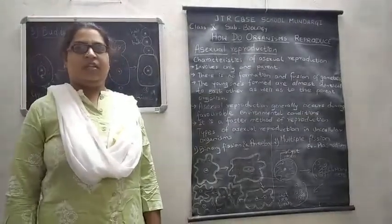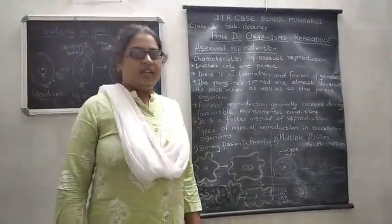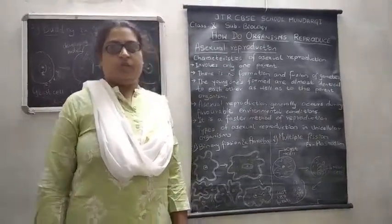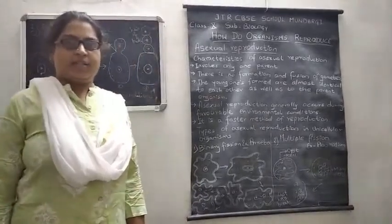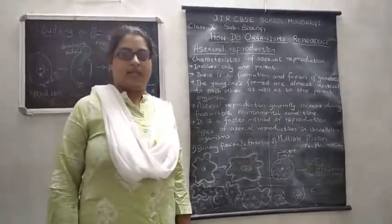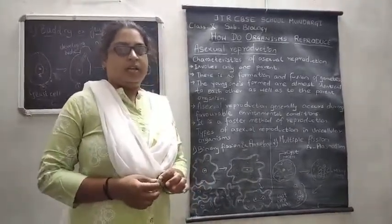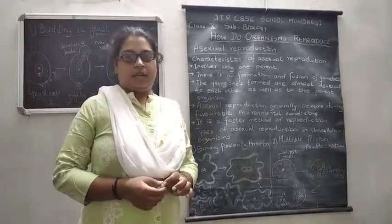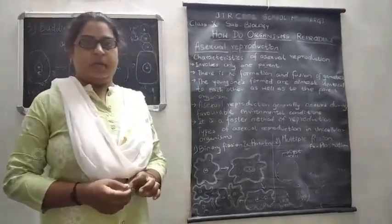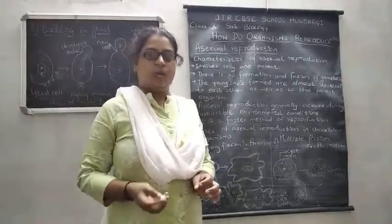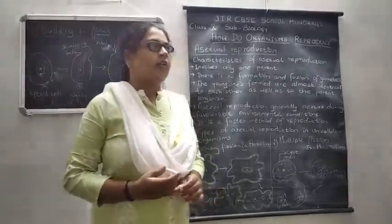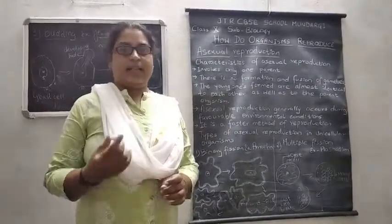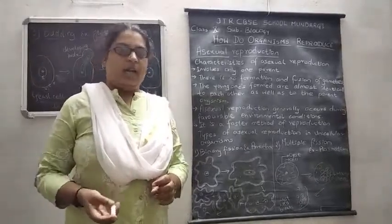Hello, welcome to Class 10th Biology. In the last class I already told you about reproduction and types of vegetative propagations in plants, which is a type of asexual reproduction. Today you will be learning about asexual reproduction methods in single-celled organisms. The definition of asexual reproduction: it is a type of reproduction in which only a single organism is involved, and from that single organism new offspring are formed which are exactly the same as the parent cell.